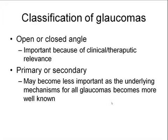Glaucoma can typically be classified into open or closed-angle categories. This is the most important clinical classification to make, because there are different therapeutic strategies used initially for these two subcategories. Glaucomas can also be classified as either primary or secondary — primary being no obvious cause, and secondary where the glaucoma is obviously related to other coexisting pathology. This differentiation may become less important as the underlying mechanisms for all glaucomas become more clearly known.